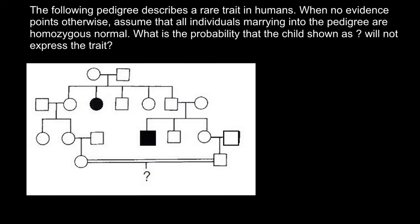Hello and welcome to Nikolai's genetics lessons. Today's problem: the following pedigree describes a rare trait in humans. When no evidence points otherwise, assume that all individuals marrying into the pedigree are homozygous normal. What is the probability that the child shown as question mark will not express the trait?